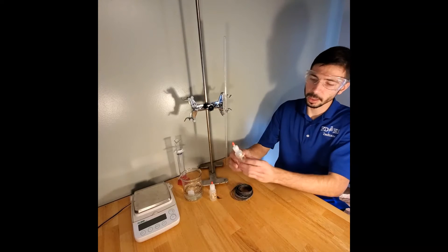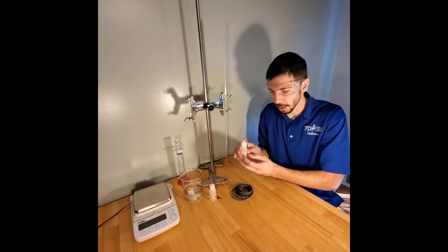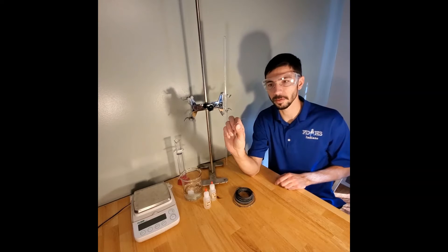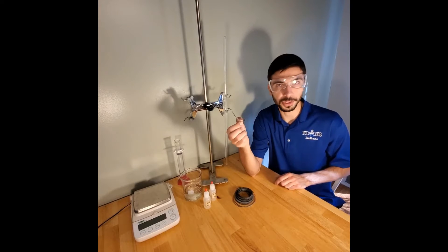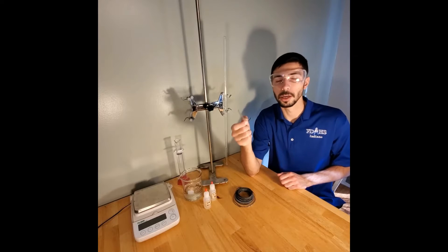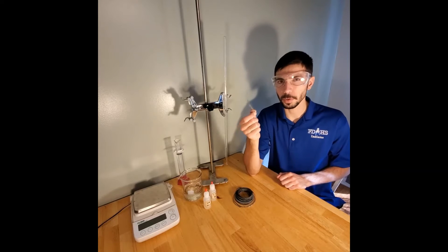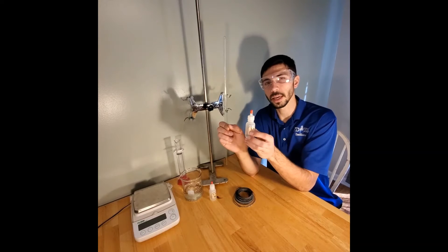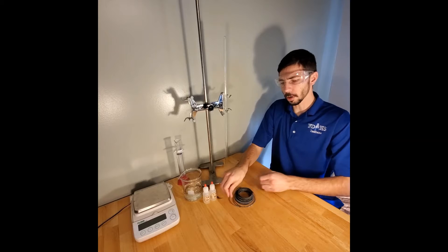We will be dealing with hydrochloric acid, HCl, as well as magnesium. This is found as ribbons. Remember we burn this stuff and it burns very bright? Well we're not going to be burning it, we're not going to react it with oxygen. We will be reacting it with hydrochloric acid.